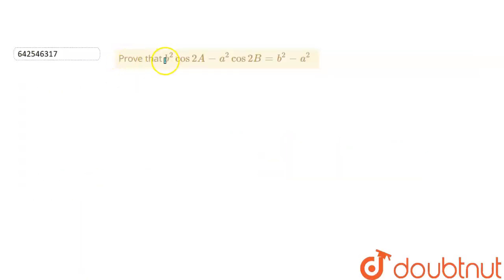In this question we need to prove that b squared cos 2A minus a squared cos 2B is equal to b squared minus a squared.